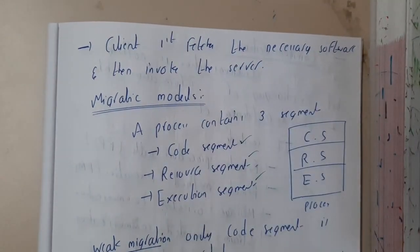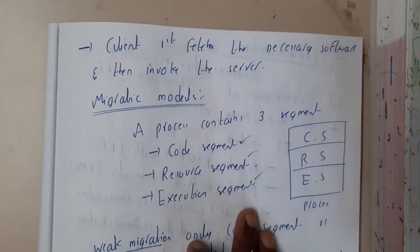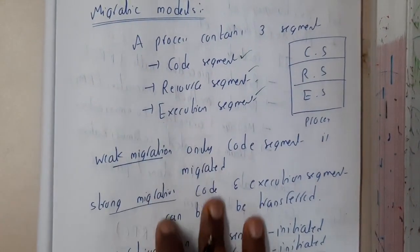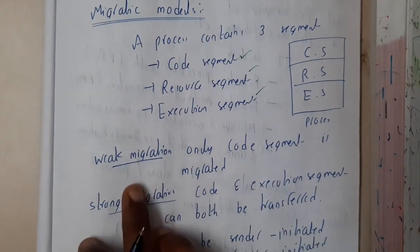Execution segment is where the final executable file is stored. These things can also be migrated based on your requirement. Migration can be divided into two types: weak migration and strong migration.